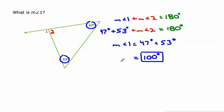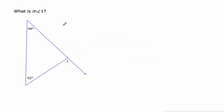So the shortcut here is that this exterior angle is equal to the sum of the other two. So let's just use that here.